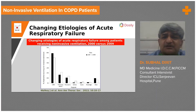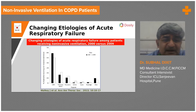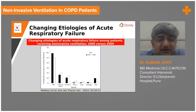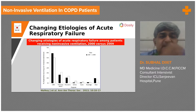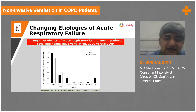The changing etiology of acute respiratory failure receiving non-invasive ventilation shows that COPD plays a very important role — this was published in the Annals of Thoracic Surgery. Second was pulmonary edema, third was pneumonia, fourth was asthma, and then neurological and other diseases. The etiological selection is very important and plays a very important role.